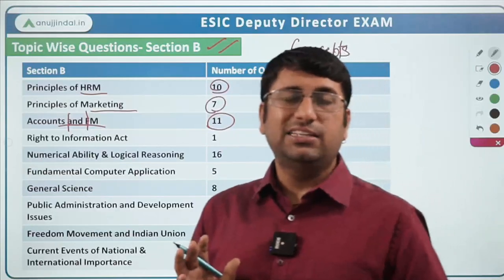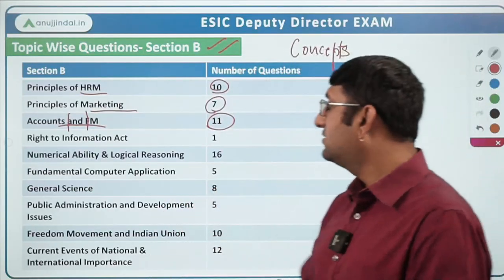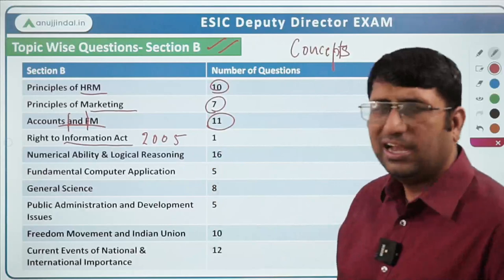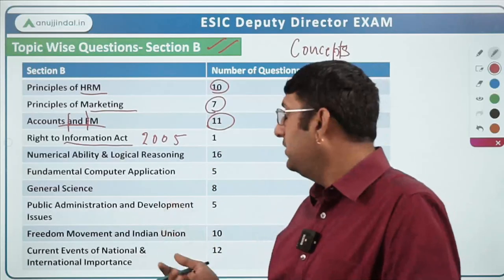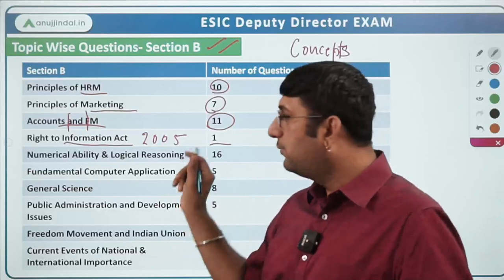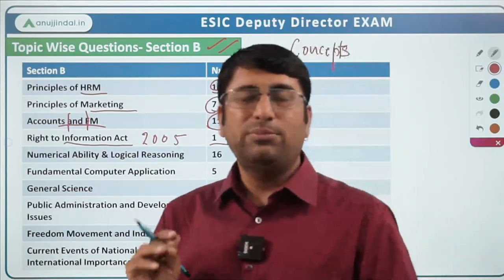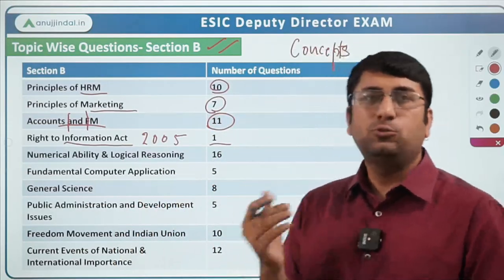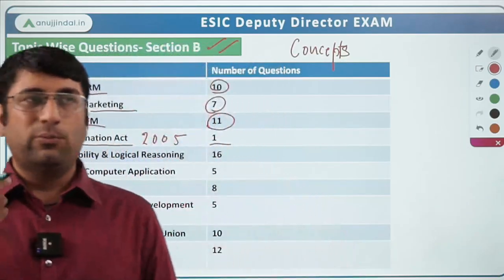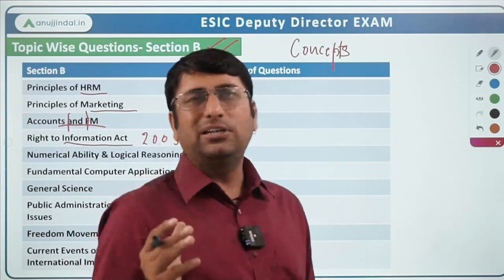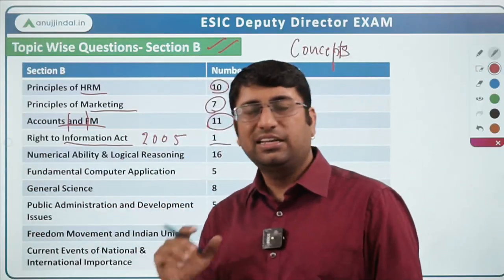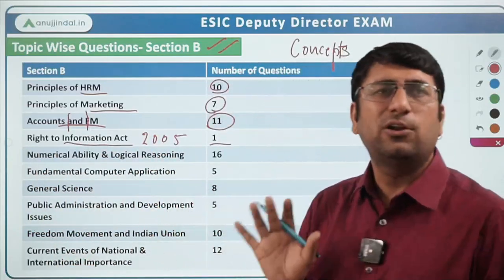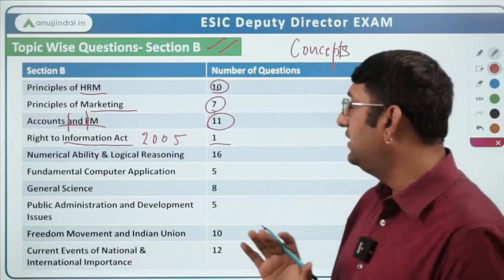For Financial Management, important topics include capital budgeting decisions and dividend decisions — please prepare these well as more questions came from these. Next is the Right to Information Act 2005, which is a legal topic but not very difficult. General awareness about this should be sufficient. Only 1 question was asked — basics like how much time to provide information when it relates to life and property, or how to appeal to the PIO (Public Information Officer).